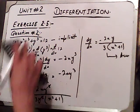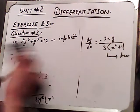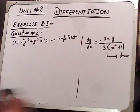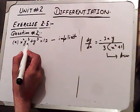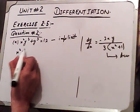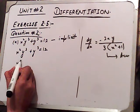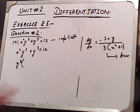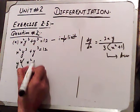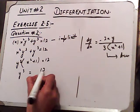Now we will change to explicit form, expressing y in terms of x. What is given: x squared y cubed plus y cubed equals 12. Taking y cubed as common: y cubed (x squared plus 1) equals 12. So y cubed equals 12 divided by (x squared plus 1).